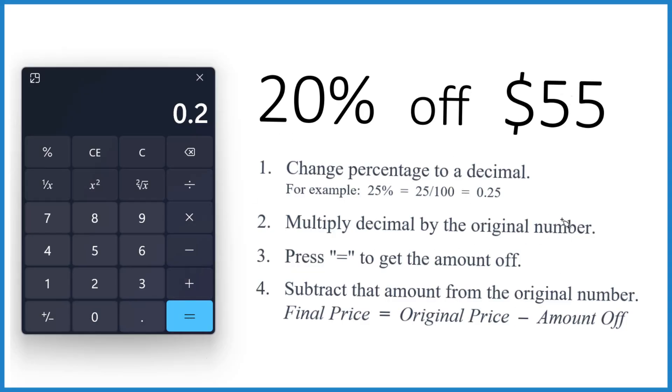Then we take and multiply that 0.2 times the original number. That's the $55. So 0.2 times 55. We hit the equals button and we get 11.